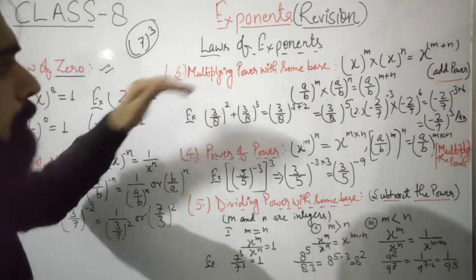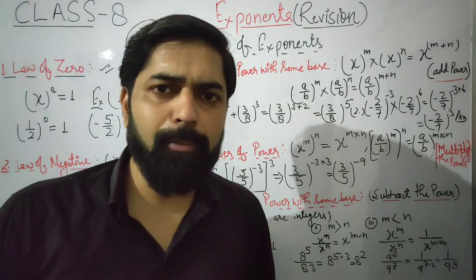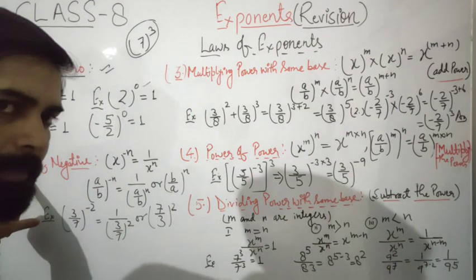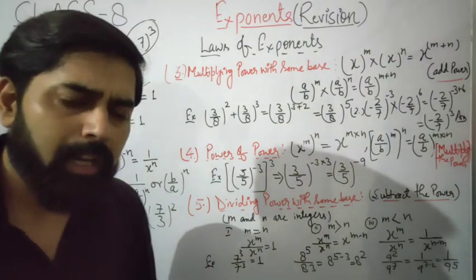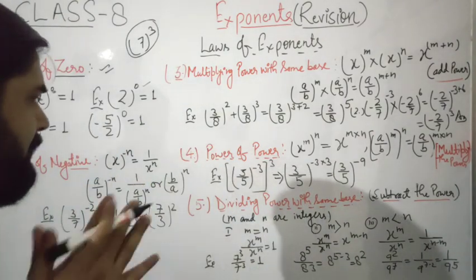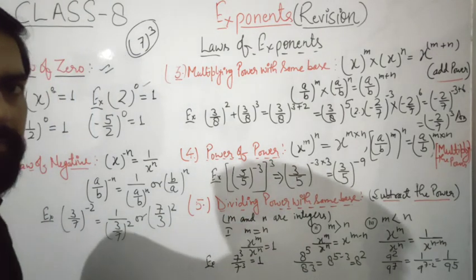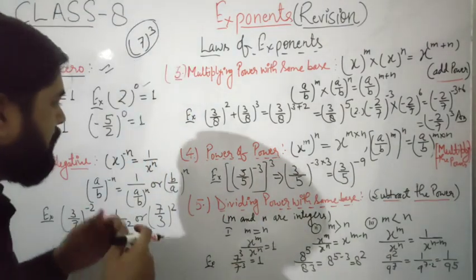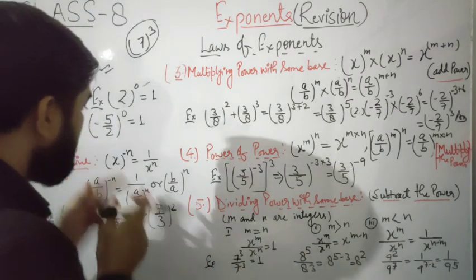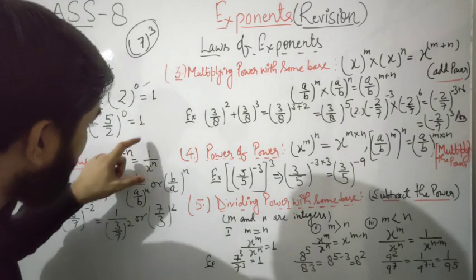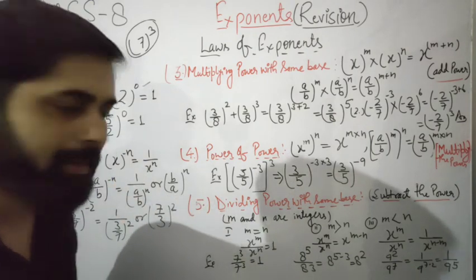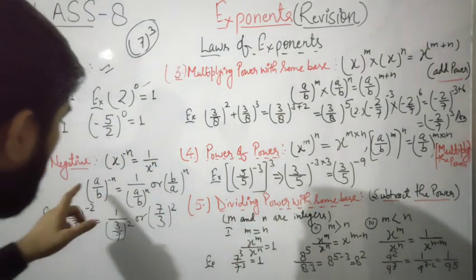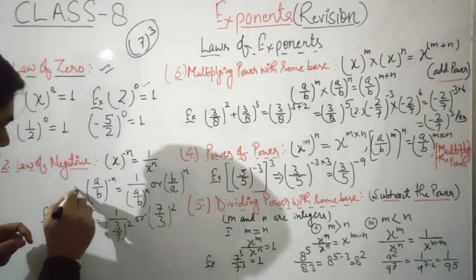You can call this the first law — there are five important laws of exponents in total. The next law covers negative exponents. When we have a negative number in the power, x to the power minus n equals one upon x to the power n. This is the method to find the value of any number with a negative power.